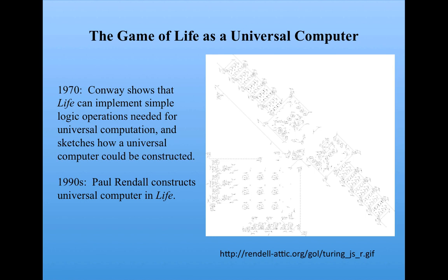Here's a picture of part of the universal computer that he constructed. It's a little hard to see, but it uses some of those structures we looked at earlier, such as gliders, glider guns, and so on, to implement these logical operations needed for universal computation. I have to say that this is a fantastically complicated undertaking to actually implement this kind of computation in a cellular automaton.